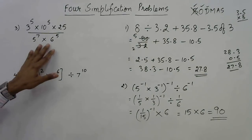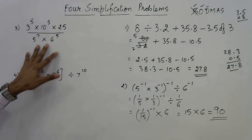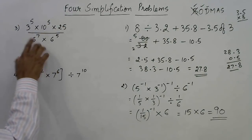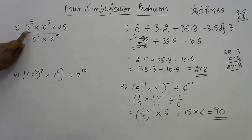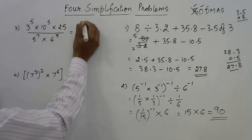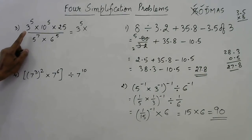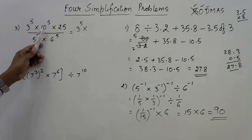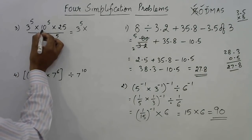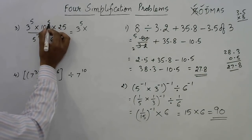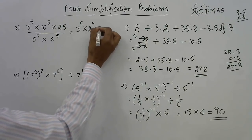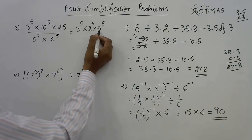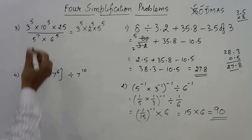Now let's see the third question — again a question with powers of some bases. Whenever you get a simplification problem of this kind, first check how many of the bases are prime. Base 3 is a prime number, so leave that term as it is. Base 10 is not prime; its factors are 2 and 5, so break 10 into 2 and 5. With a power of 5, we get 2 raised to power 5 and 5 raised to power 5, since 10 power 5 means (2×5) whole power 5. This has now been converted into prime bases.